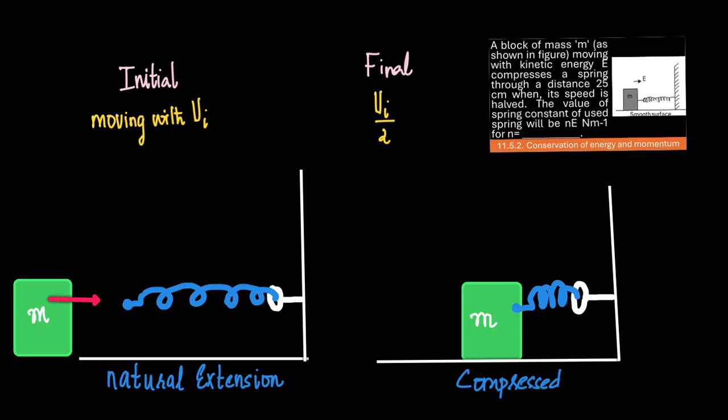A block of mass M, moving with kinetic energy E, compresses a spring. The spring is compressed through a distance of 25 cm when the block's speed is halved. Find the value of the spring constant.